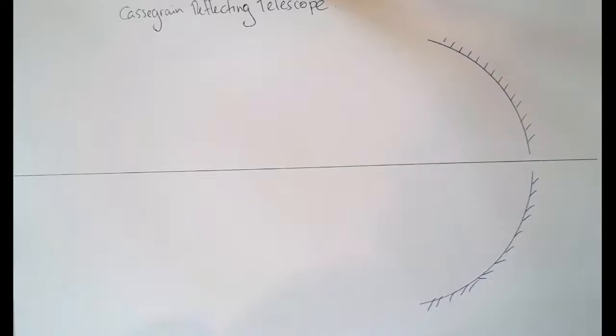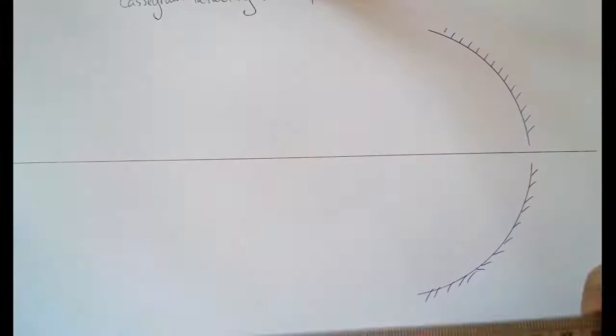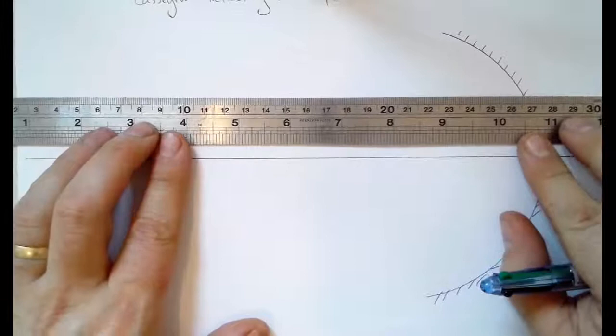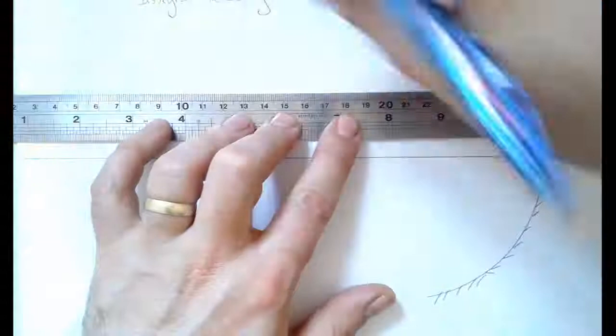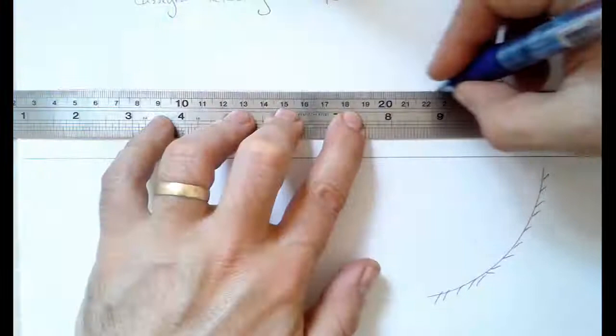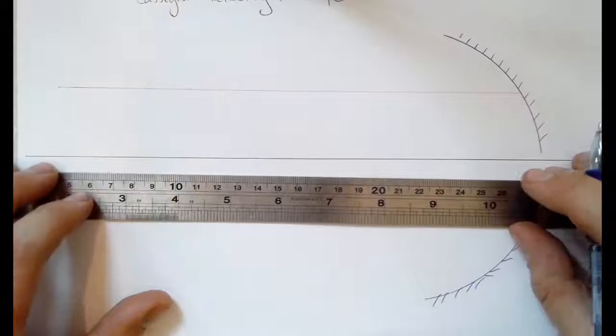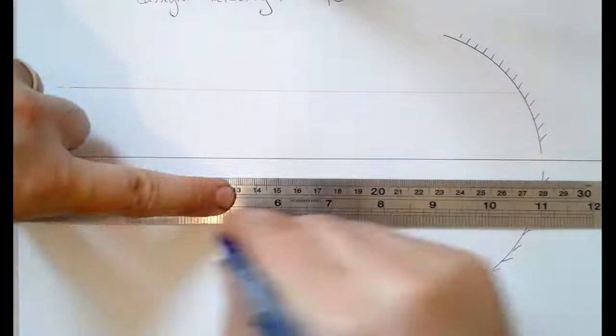And we're going to start off with two axial rays, so two rays that are parallel to the principal axis. I'll use red for these ones. Make sure they are as parallel as we can get them. Here they come in, they strike the mirror here and we'll have one on the other side of the principal axis coming in here like that.